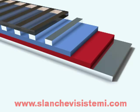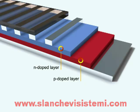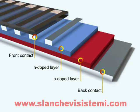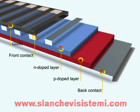A solar cell consists of 2 silicon panels sandwiched together. One layer is doped with N-type dopants, the other is doped with P-type dopants. To allow an electrical flow of electrons, a front and a back contact are installed to the layers. Glass is installed on top to protect the layers and the electrical contacts from damage.